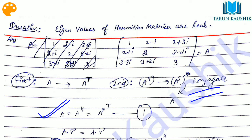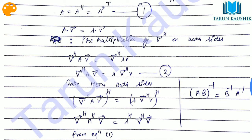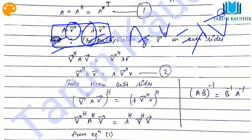Now the real proof starts from here. Let V be an eigenvector and lambda be the eigenvalue. Then A times the eigenvector equals lambda times that eigenvector. This is the eigenvalue property — it is just a system of linear equations expressed in matrix form. Call this Equation 1.